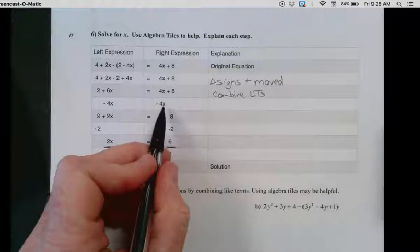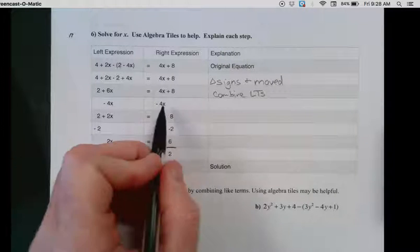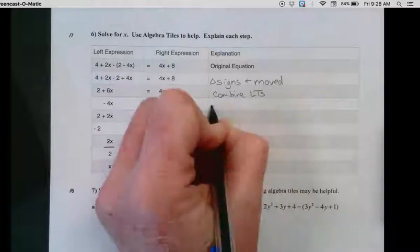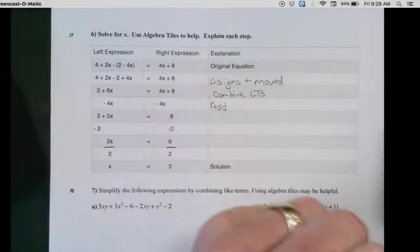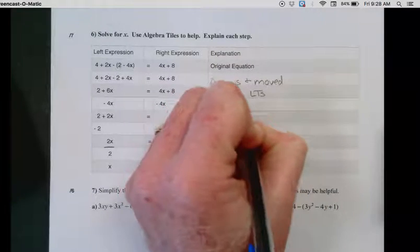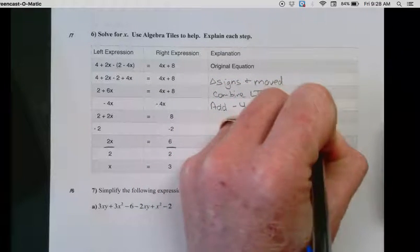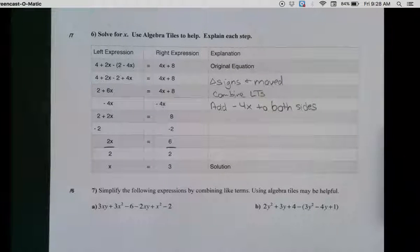Now, it looks like we're performing an operation. We are adding 4 negative x tiles to both sides. So you could say add negative 4x to both sides, or you could say subtract 4x from both sides. Same thing.